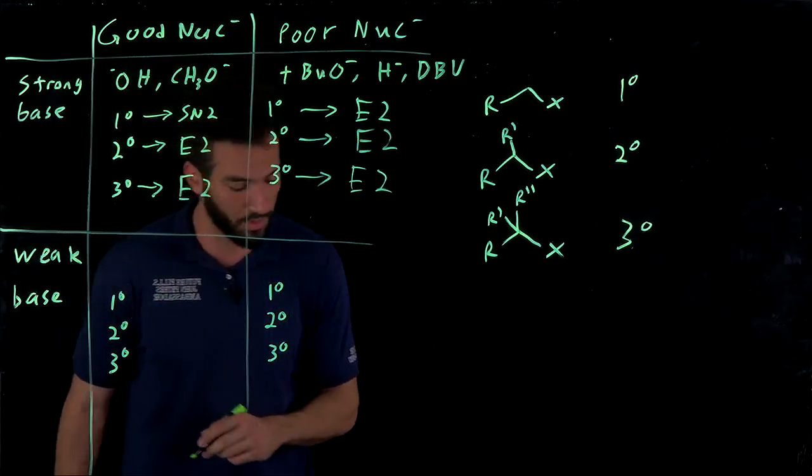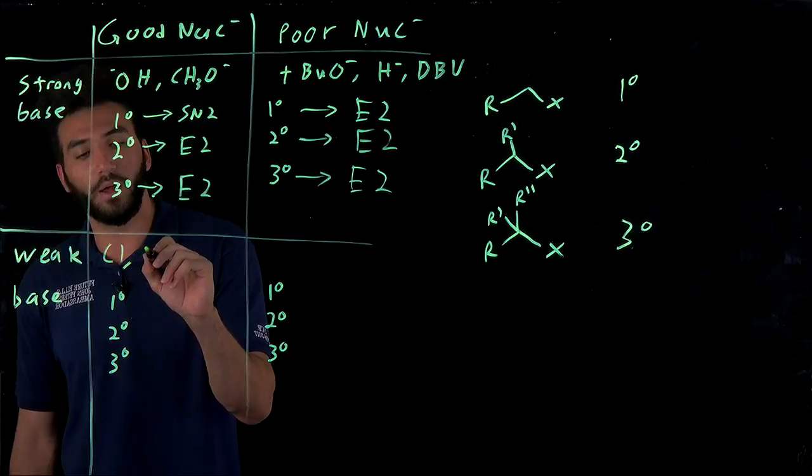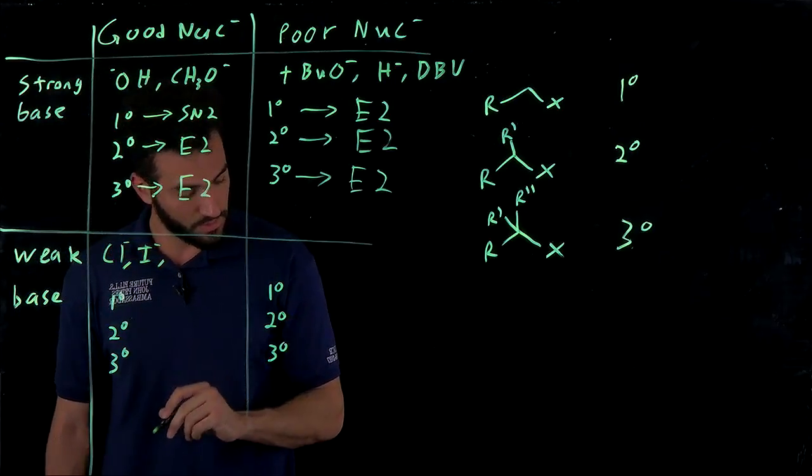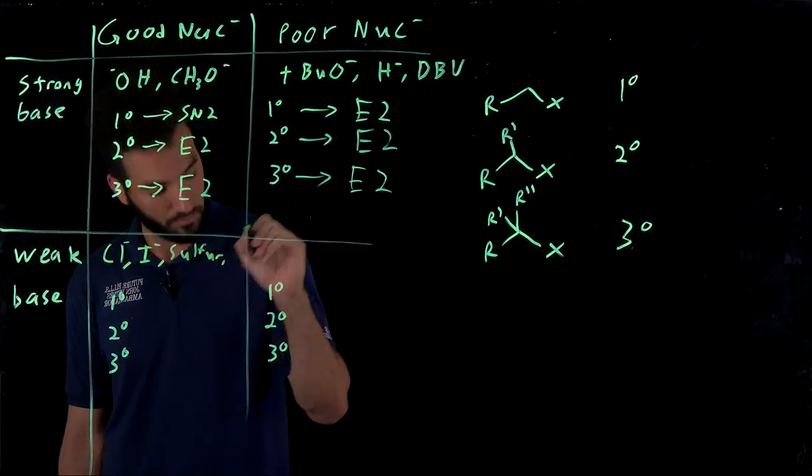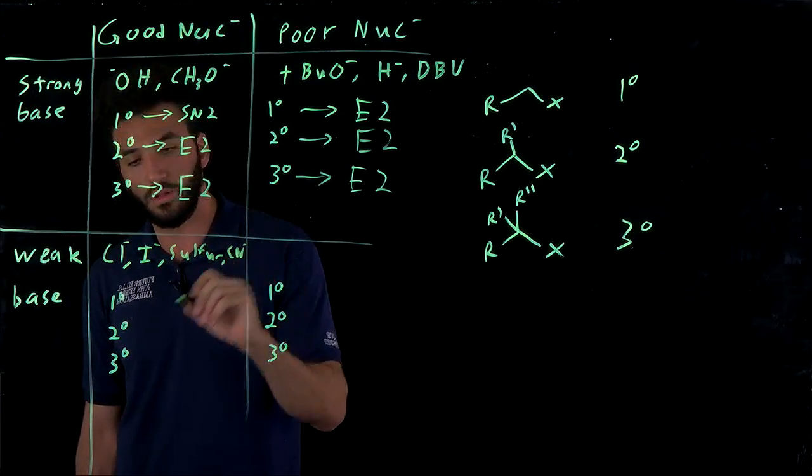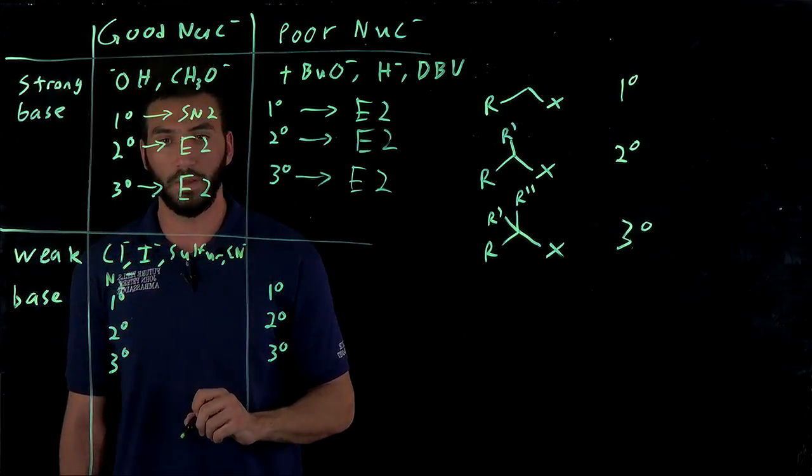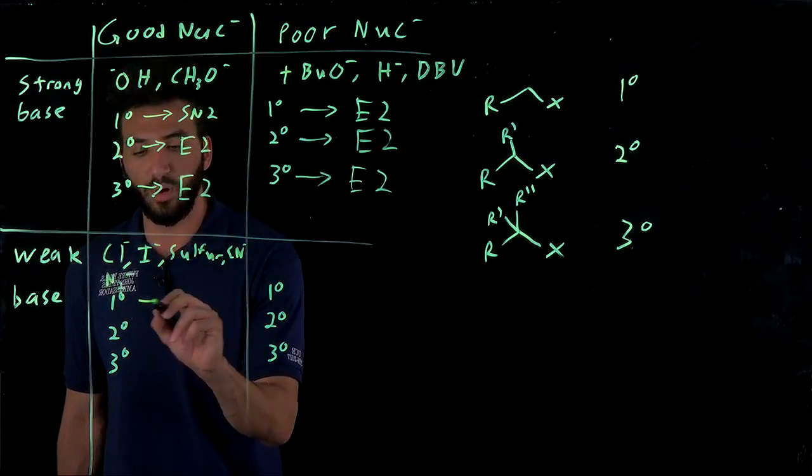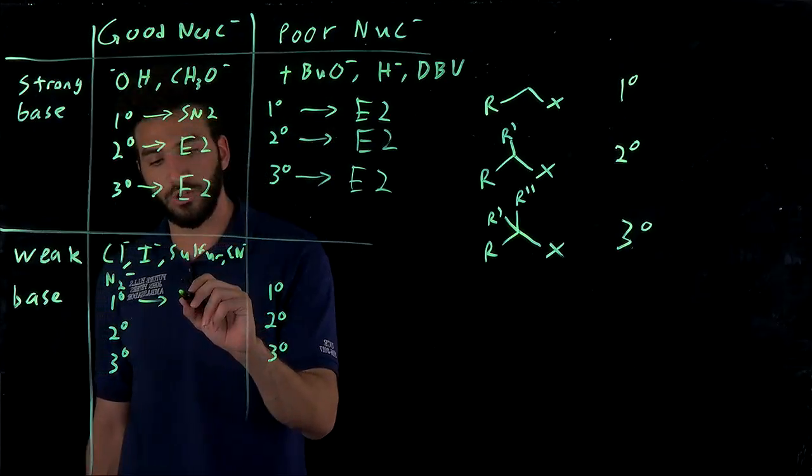So what's an example of a good nucleophile that's a weak base? So things like halide, so Cl, iodine, sulfur compounds, CN-, and N3-. These are all good nucleophiles that are weak bases. And if we have a primary, it's going to go through an SN2 reaction only.